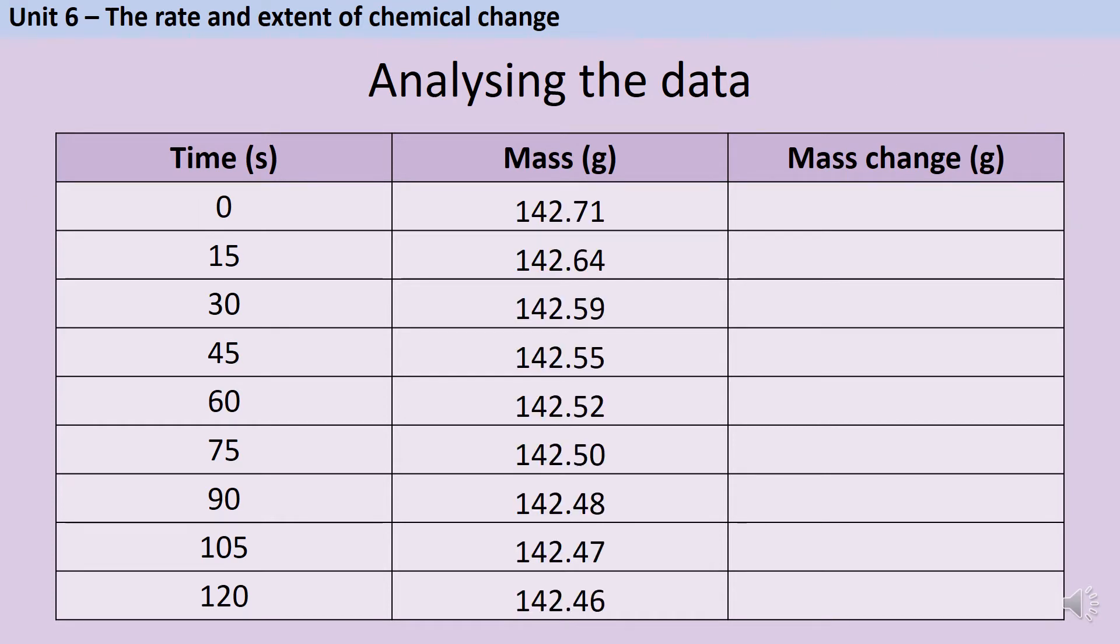Now that I have the results table drawn, I can add the mass data that I collected during the experiment. I can use this to work out the mass change. Remember, this is the change from the mass that we started with. So for the first row, the mass change is zero. Since all of my masses are to two decimal places, I'm going to include my mass changes to two decimal places as well.